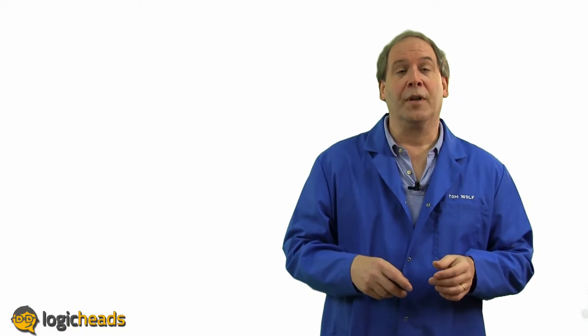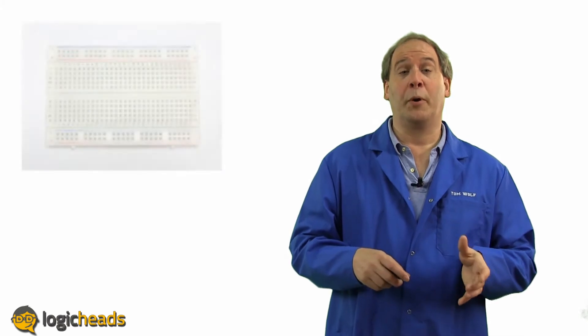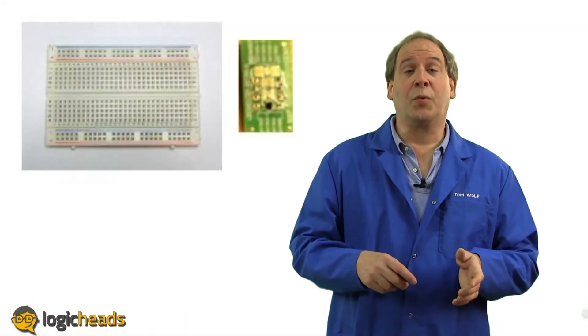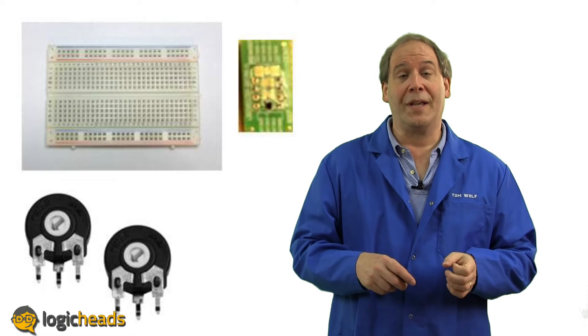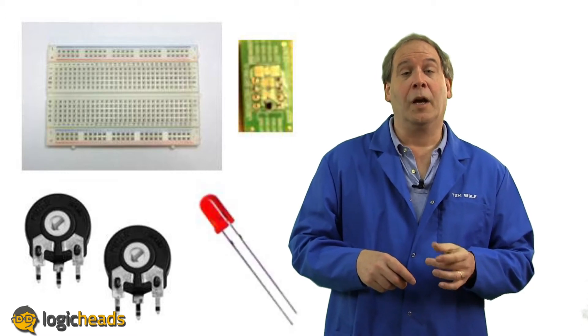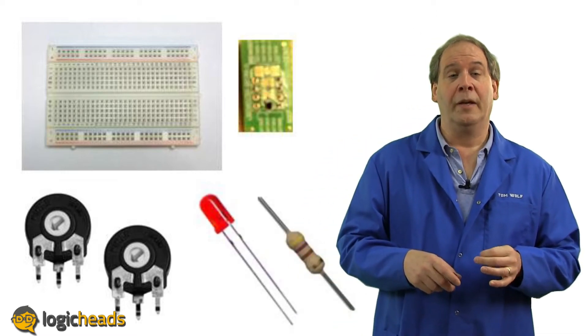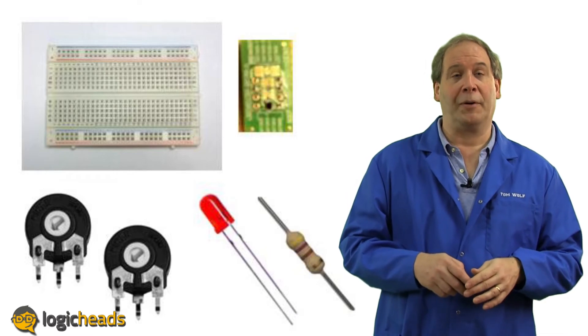To build this circuit, we need the following: a proto-board, the NCX2202 on an adapter board, two trim potentiometers, an LED, a current limiting resistor for the LED, and a couple batteries or a lab power supply.